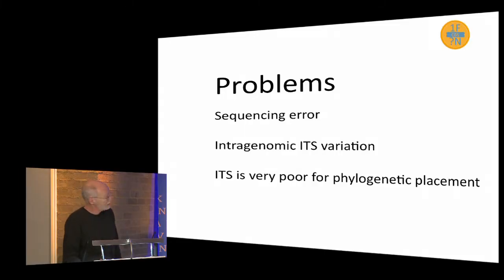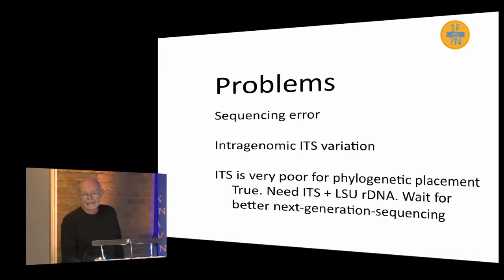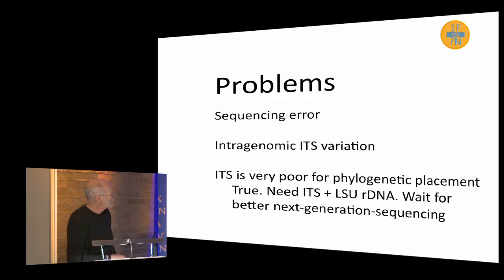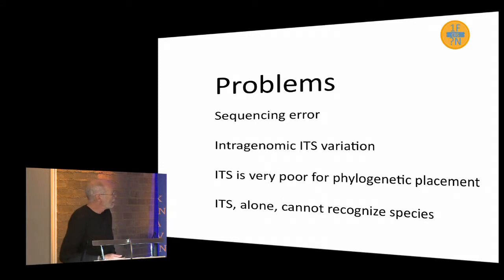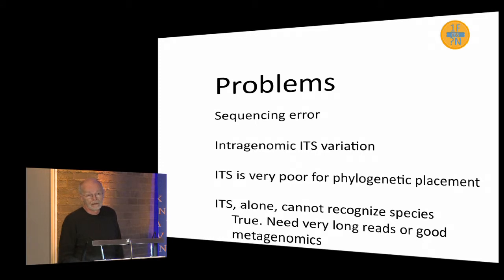ITS is very poor for phylogenetic placement — that's true. We need ITS plus large subunit at least. Remember, these are environmental sequences; we don't have the whole organism or necessarily the whole genome. We need contiguous pieces of DNA, so we have to wait for better next-generation sequencing so we can get ITS and LSU on the same read. ITS alone cannot recognize species; we would need very long reads, good metagenomics, or a database populated with probably 10,000 fungal genomes.